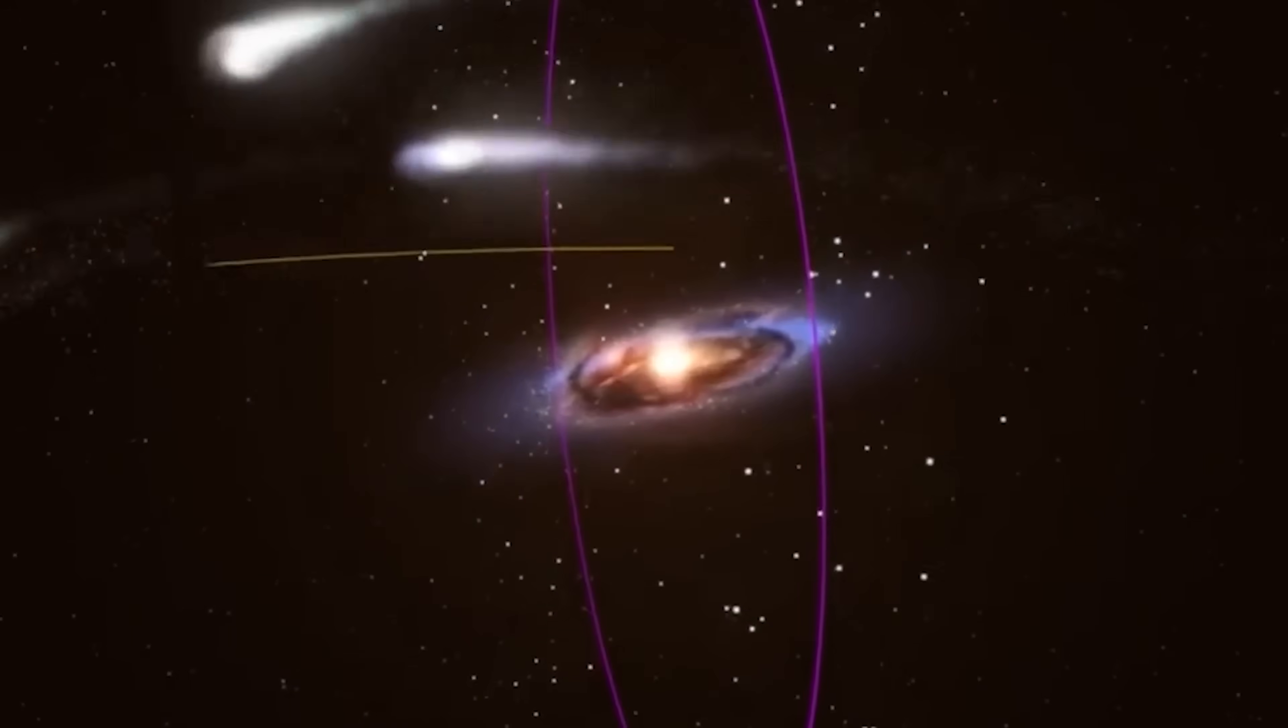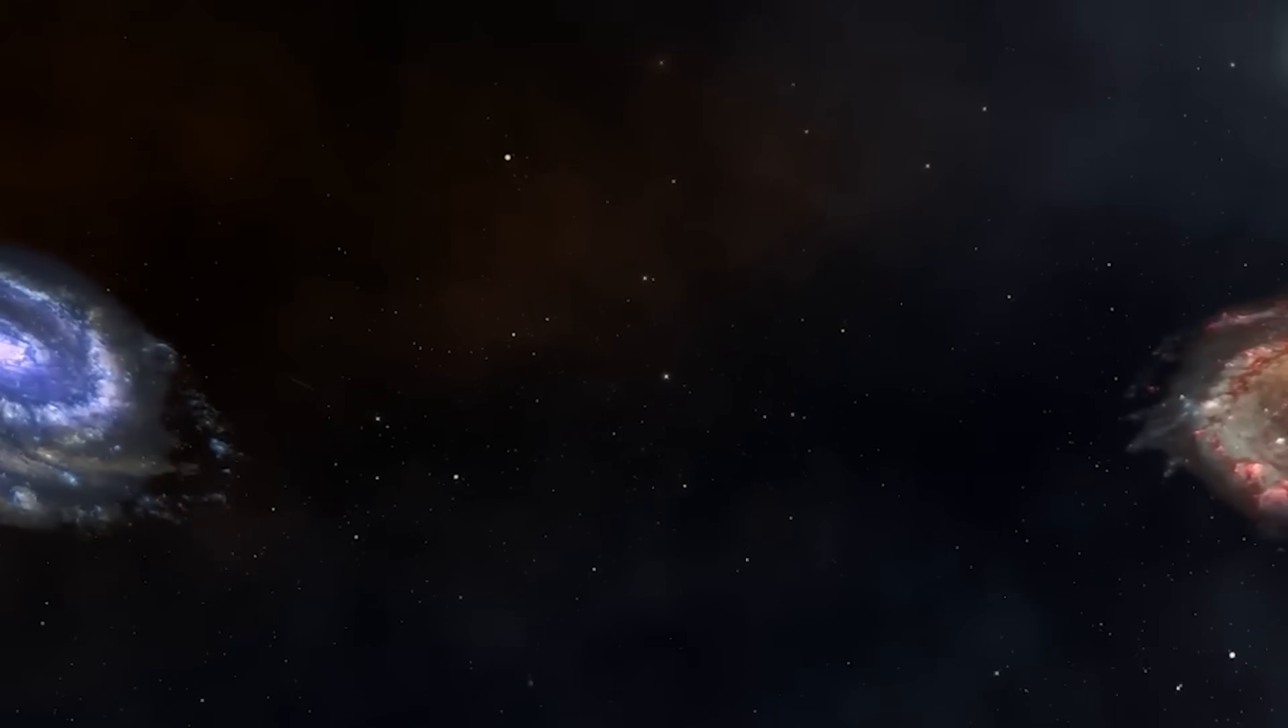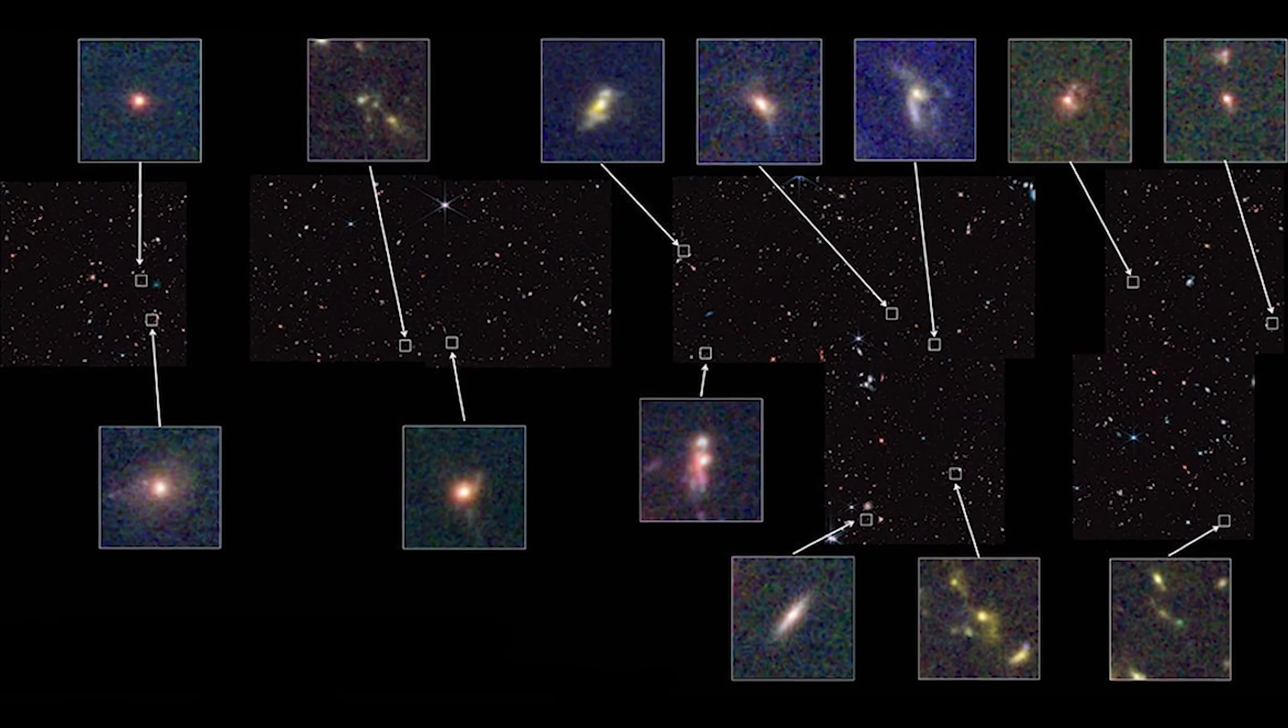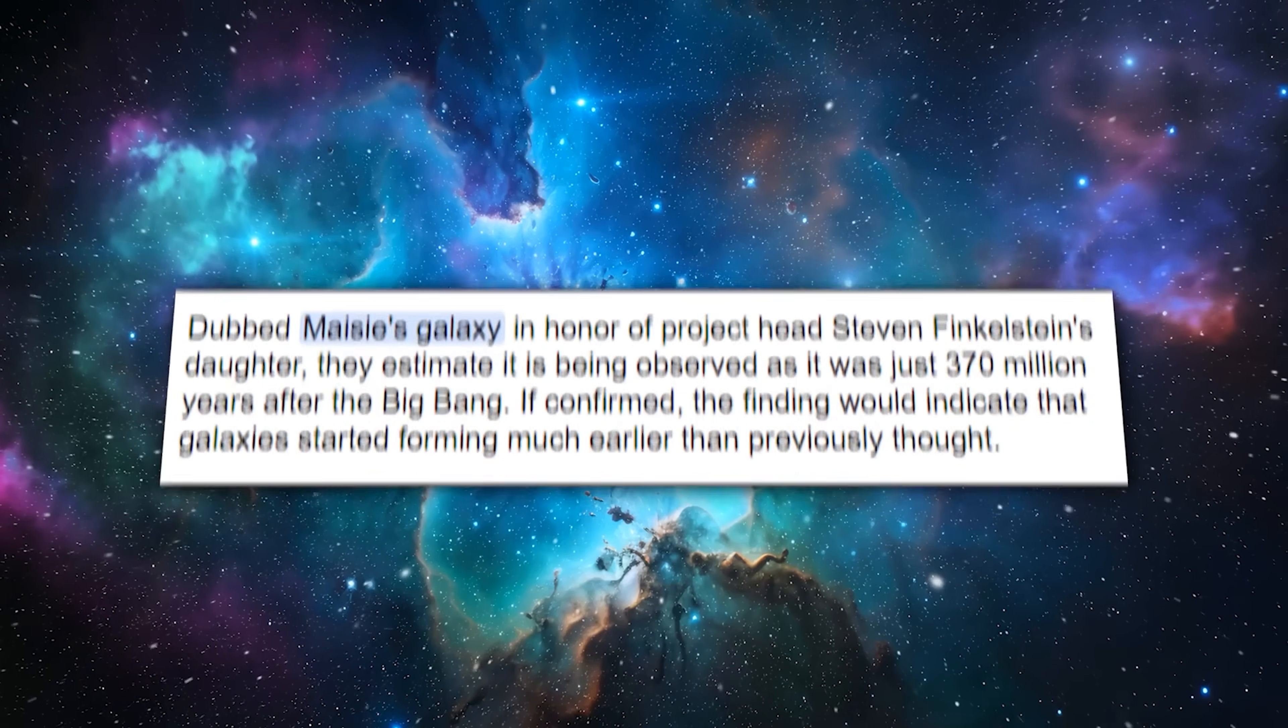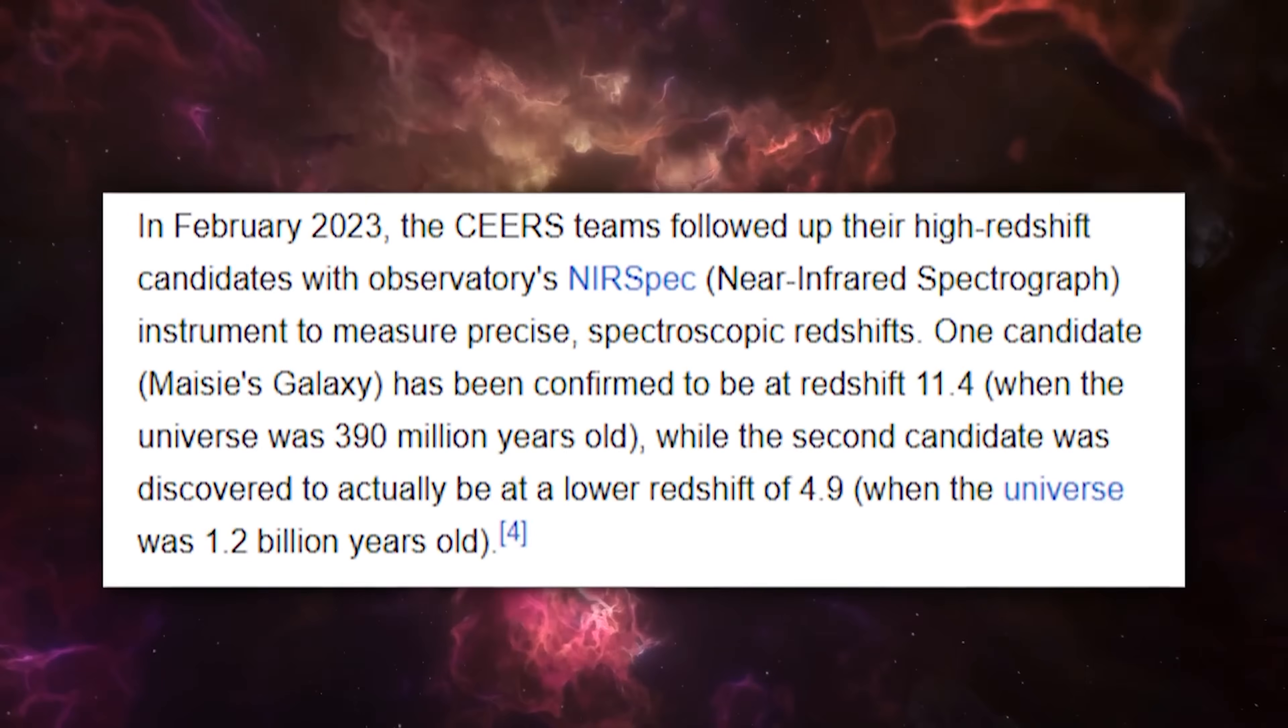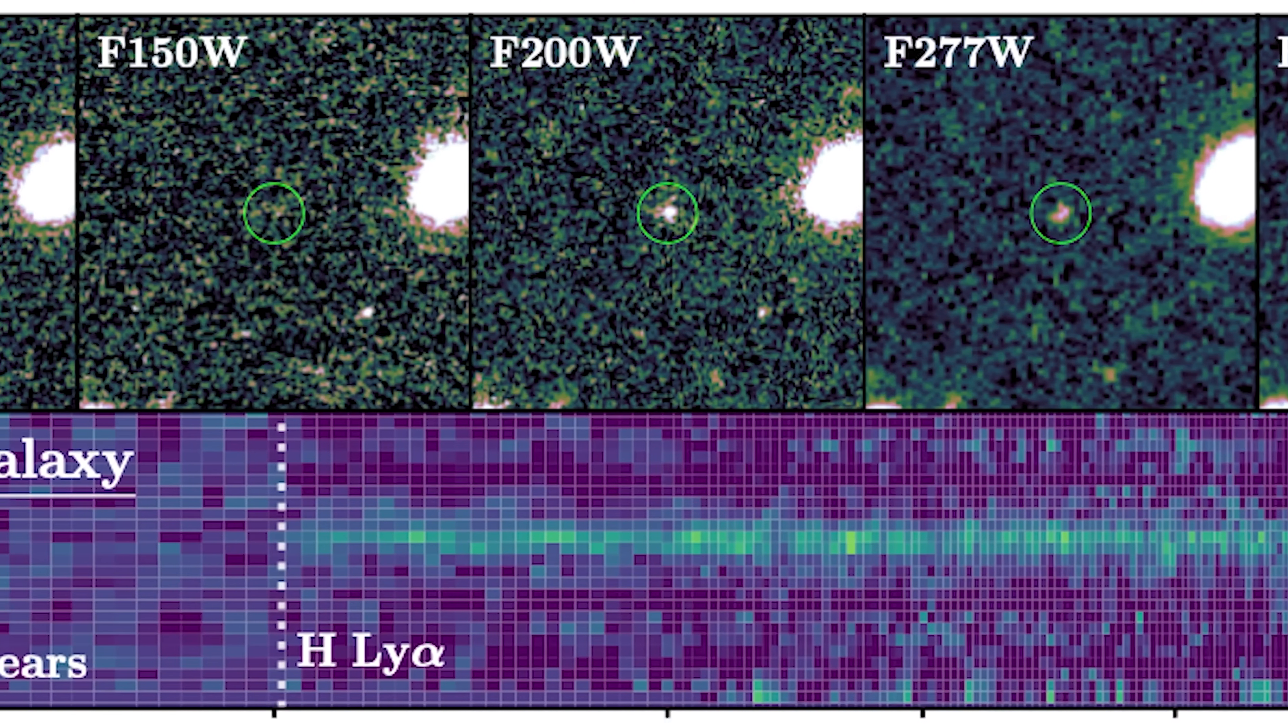With each passing moment, galaxies began to flicker into view across the tapestry of time and space, revealing their hidden secrets. Among its findings, the Webb Telescope has identified approximately 10 additional galaxies that may predate the famous Macy's Galaxy, named by Austin astronomer Stephen Finkelstein after his daughter as it was discovered on her birthday. This particular galaxy was initially estimated to have formed only 290 million years after the Big Bang, making it the oldest galaxy ever recorded.